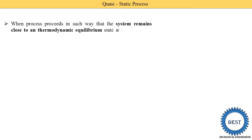The quasi-static process means it is any process. You know that there are various types of cycles. In a cycle there are a number of processes. A process proceeds in such a way that the system remains close to thermodynamic equilibrium state at all times — that is called the quasi-static process. To understand this, you need to know what thermodynamic equilibrium is. Thermodynamic equilibrium means the system must be in thermal equilibrium, mechanical equilibrium, and chemical equilibrium.